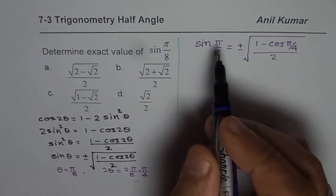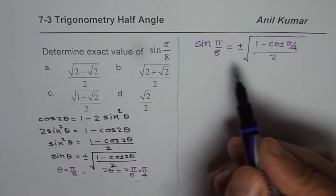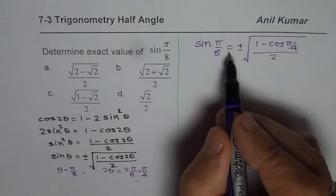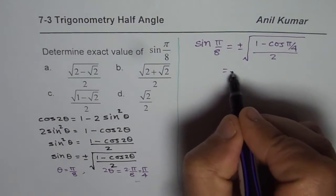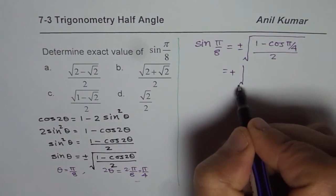Now as you know, pi by 8 actually is an acute angle, it will be in quadrant 1, therefore we should take positive value. So we will take the positive value and then continue.